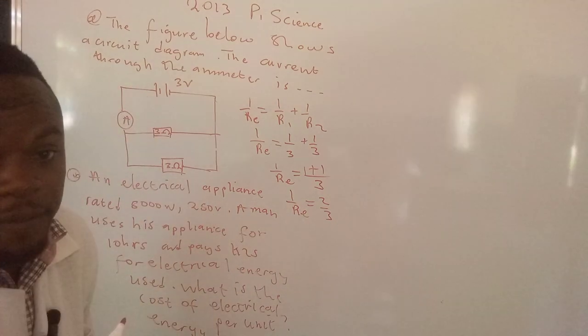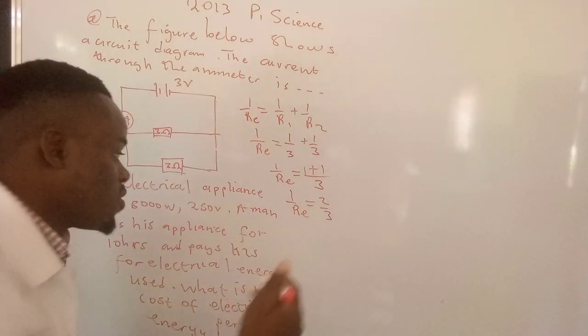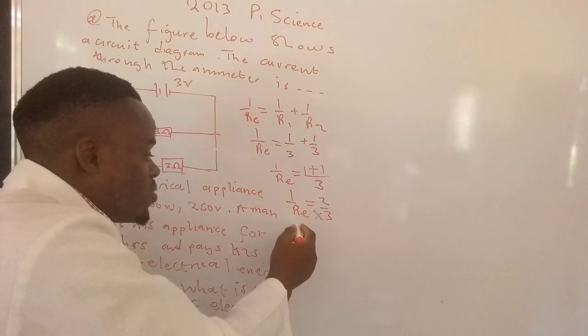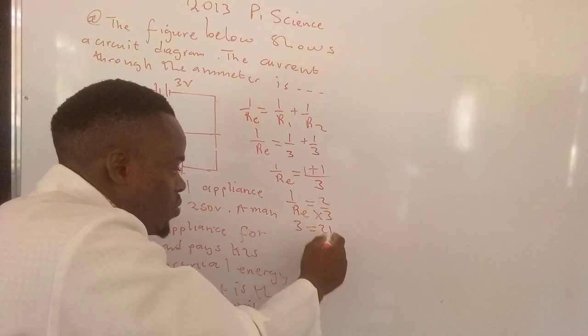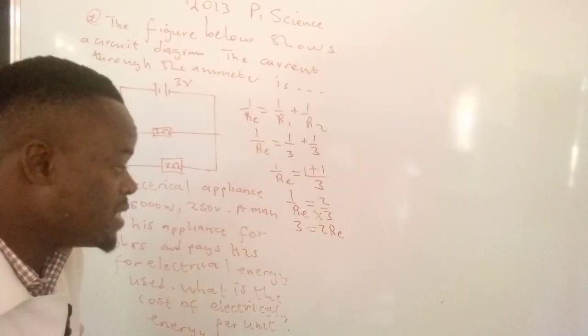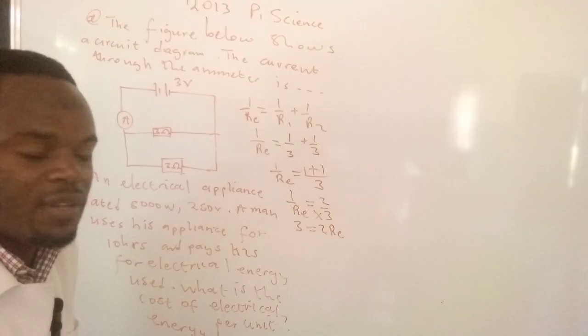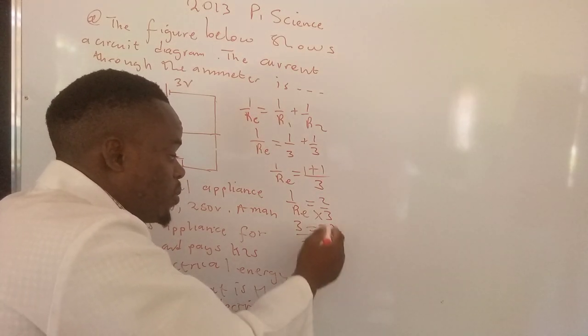We have 2 fractions separated by an equal sign. To get rid of those fractions, you have to cross multiply. 3 times 1 is 3, and 3 times 2 is 2RE. Our interest is to determine the equivalent resistor, so we divide both sides by 2.